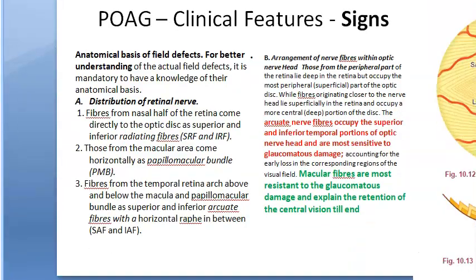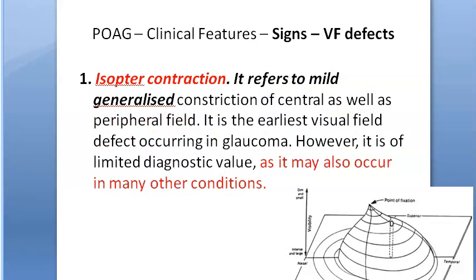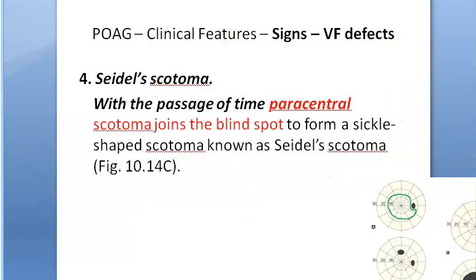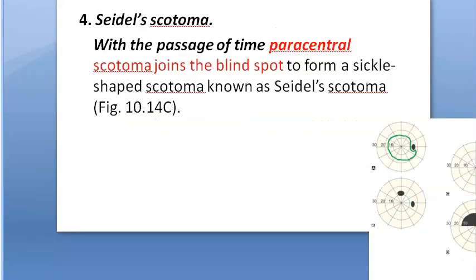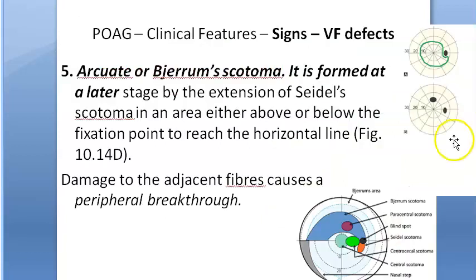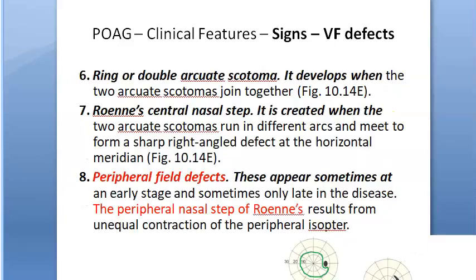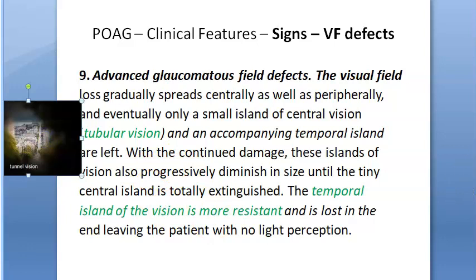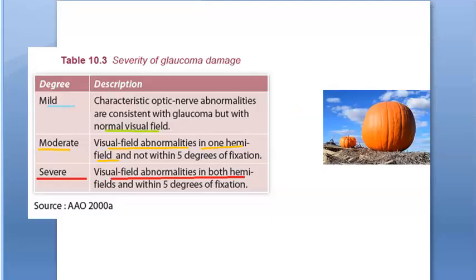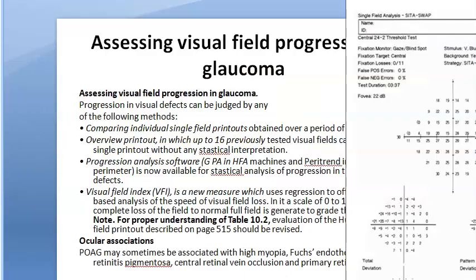Visual field defects in POAG: isopter contraction, enlargement of blind spot, small winged paracentral scotoma, Seidel scotoma (paracentral scotoma joining with blind spot, sickle-shaped), arcuate/Bjerrum scotoma, double arcuate/ring scotoma, Ronne's nasal step, peripheral field constriction, and eventually tunnel vision with temporal island of vision remaining. Severity graded as mild, moderate, severe using Humphrey's field analyzer.